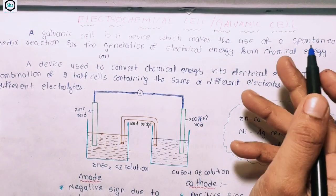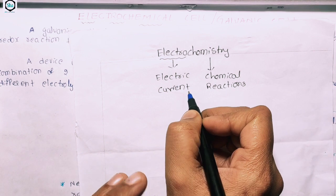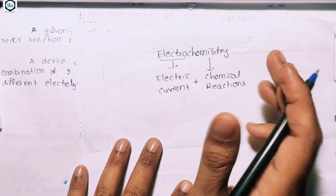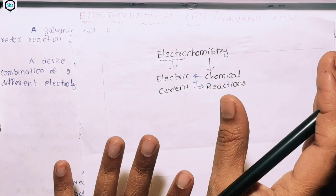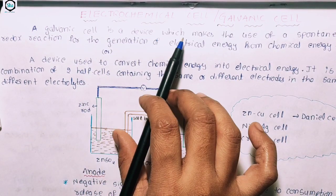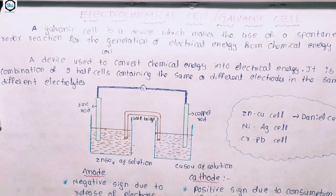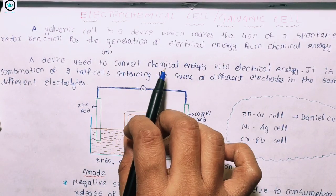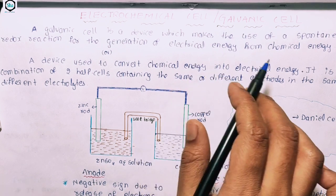Electrochemical cell, also called Galvanic cell or Voltaic cell — this is the topic of Electrochemistry. Electrochemistry is a combination of electric current and chemical reactions. A Galvanic cell is a device which makes use of a spontaneous redox reaction for the generation of electric energy from chemical energy. It is a device used to convert chemical energy into electrical energy.